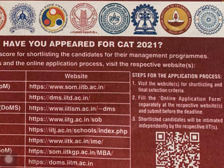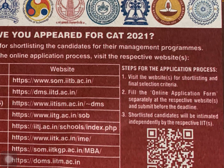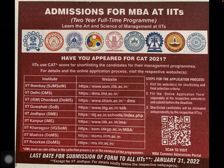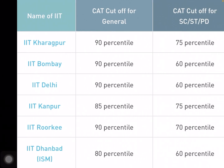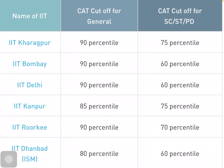The steps for the application process mention visiting the website for shortlisting and final selection criteria. Now I'll talk about the CAT cutoffs including reservation cutoffs. IIT Kharagpur requires 90 percentile for general category and more than 75 percentile for reserved categories. IIT Bombay is 90 percentile for general and 60 percentile for SC/ST and PD. IIT Delhi is 90 percentile, IIT Kanpur is 85, IIT Roorkee is 90, and IIT Dhanbad is 80 percentile.